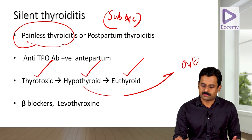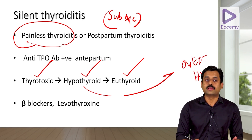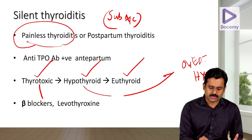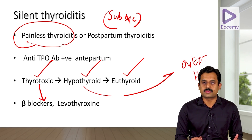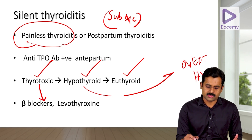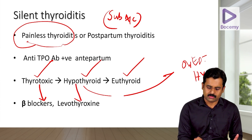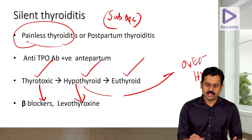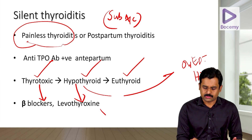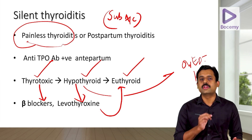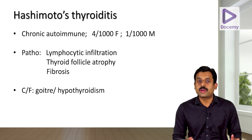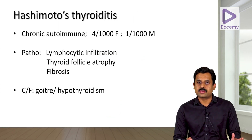The problem with silent thyroiditis is it can recur in subsequent pregnancies, and finally the patient can go into overt hypothyroidism. Treatment: in the thyrotoxic phase use beta blockers; in the hypothyroid phase supplement with levothyroxine. Once the patient is euthyroid, medications can be stopped.